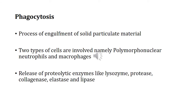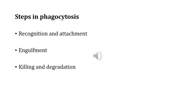The next important process in cellular events is phagocytosis — the engulfment of solid particulate matter by phagocytes. Two types of cells are mainly involved: polymorphonuclear neutrophils and macrophages. This process is accomplished by phagocytes through the release of proteolytic enzymes like lysozyme, protease, collagenase, elastase, and lipase. The process of phagocytosis proceeds in three steps: step 1, recognition and attachment; step 2, engulfment; and step 3, killing and degradation of the bacteria or microbe.